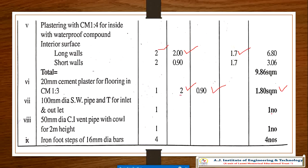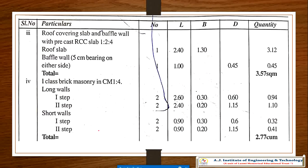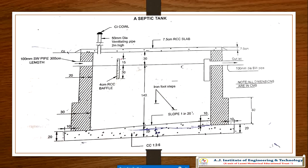Next is a 50 mm diameter vent pipe with a cowl, up to 2 meter height. This ventilating pipe is visible in the figure at 2 meter height. You can see this in your own home if you have a septic tank — vent pipes are fitted for the escape of gases. These vent pipes are readily available in the market.